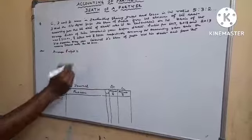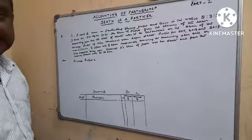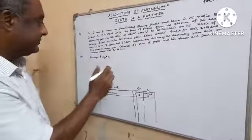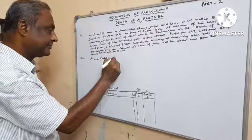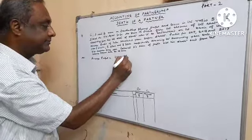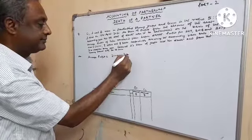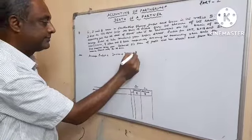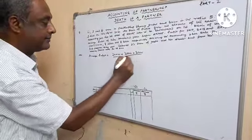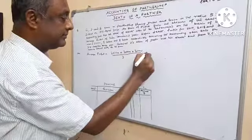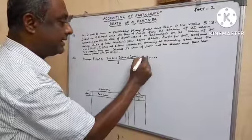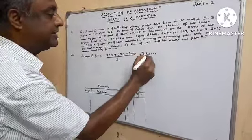Average profit equals total profit for 3 years divided by number of years, which is 3. After calculation, average profit is 30,000.